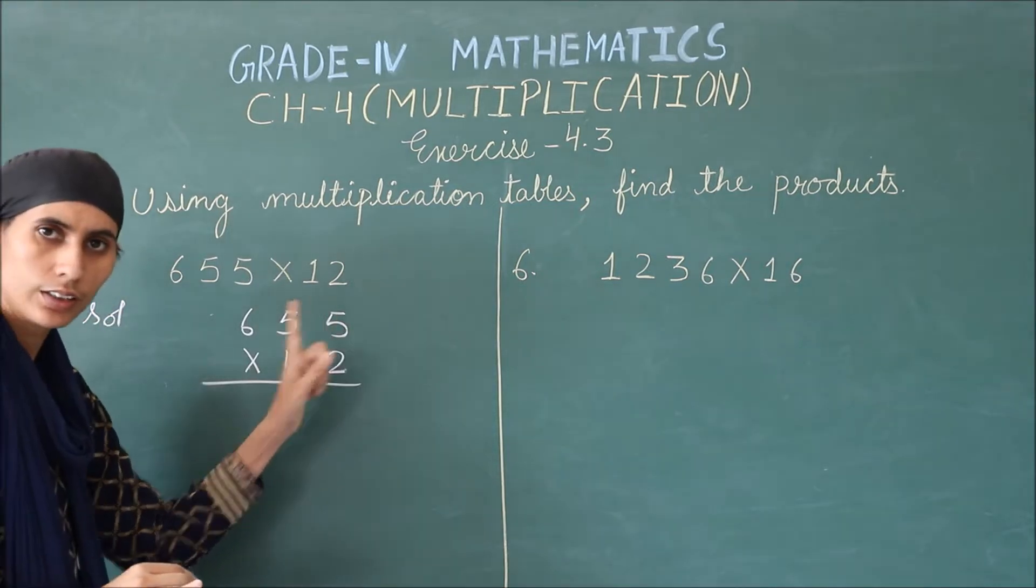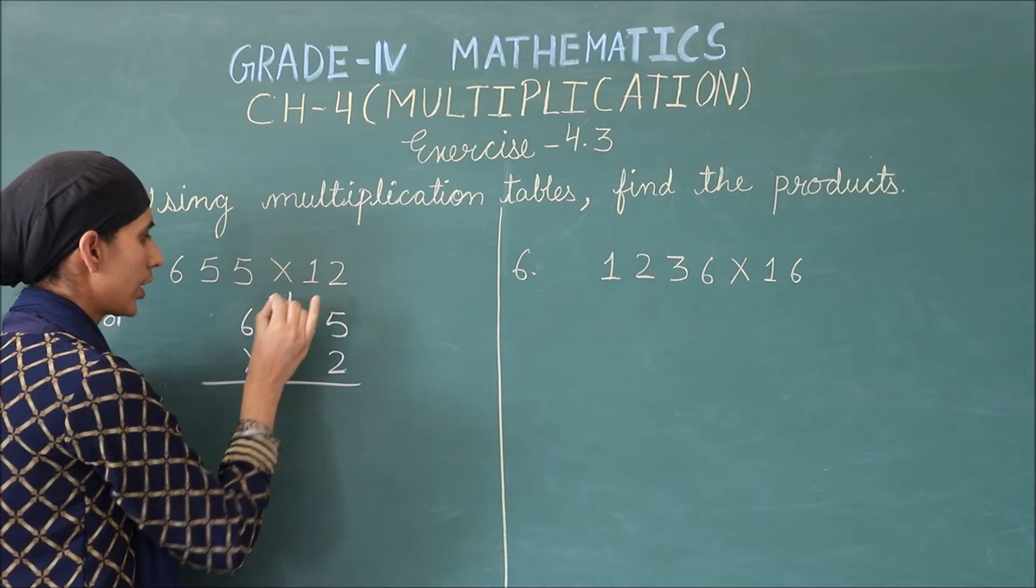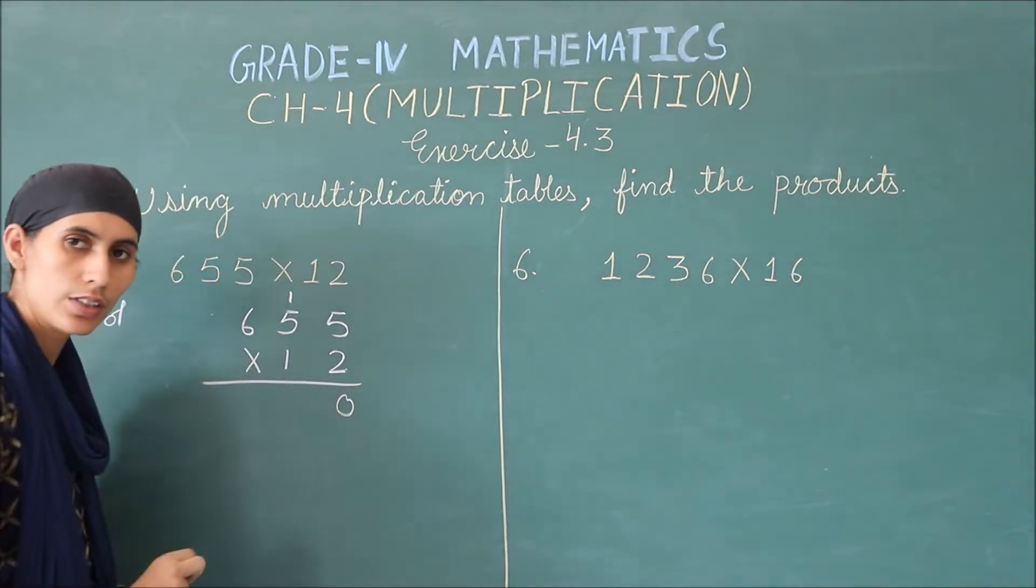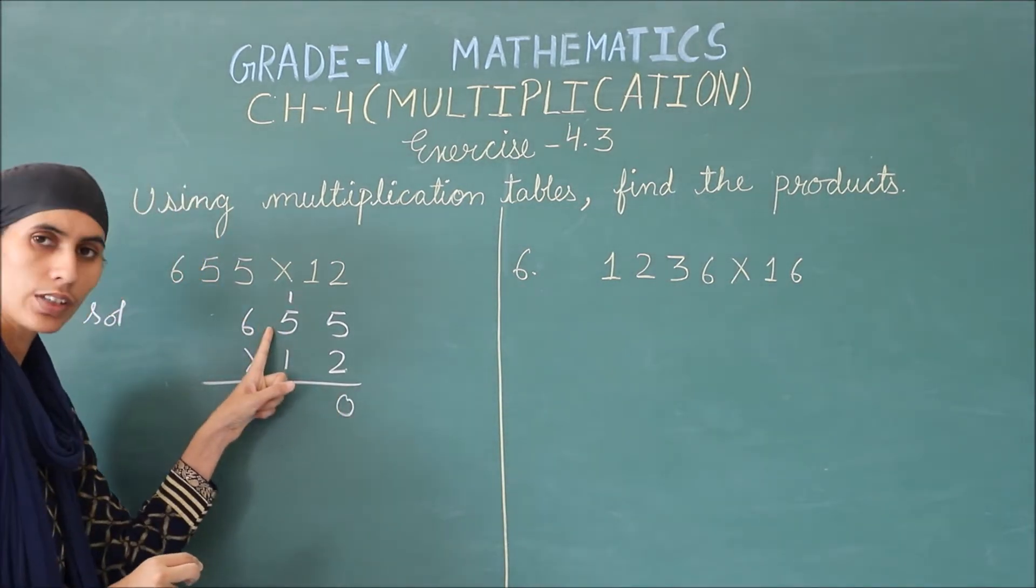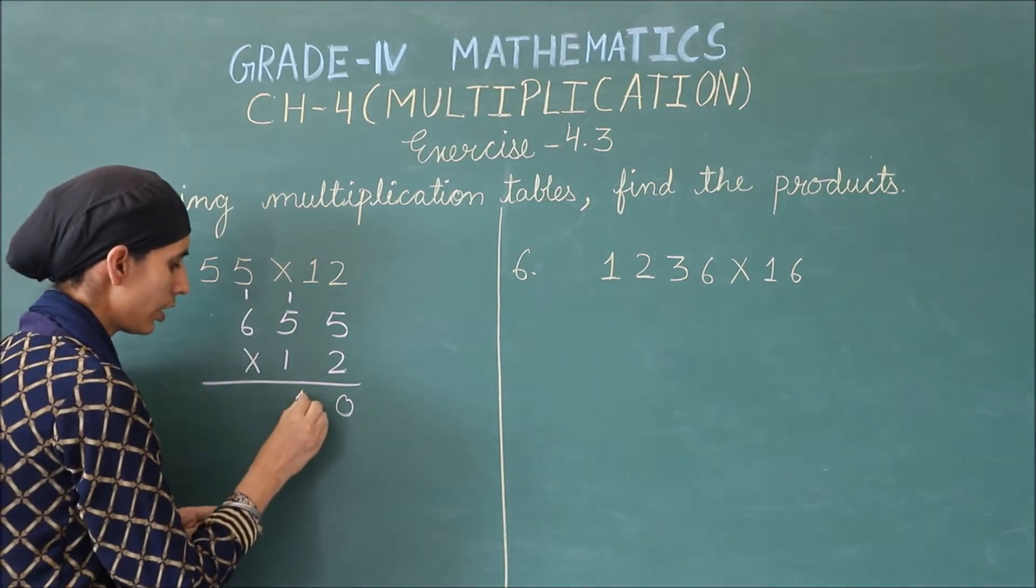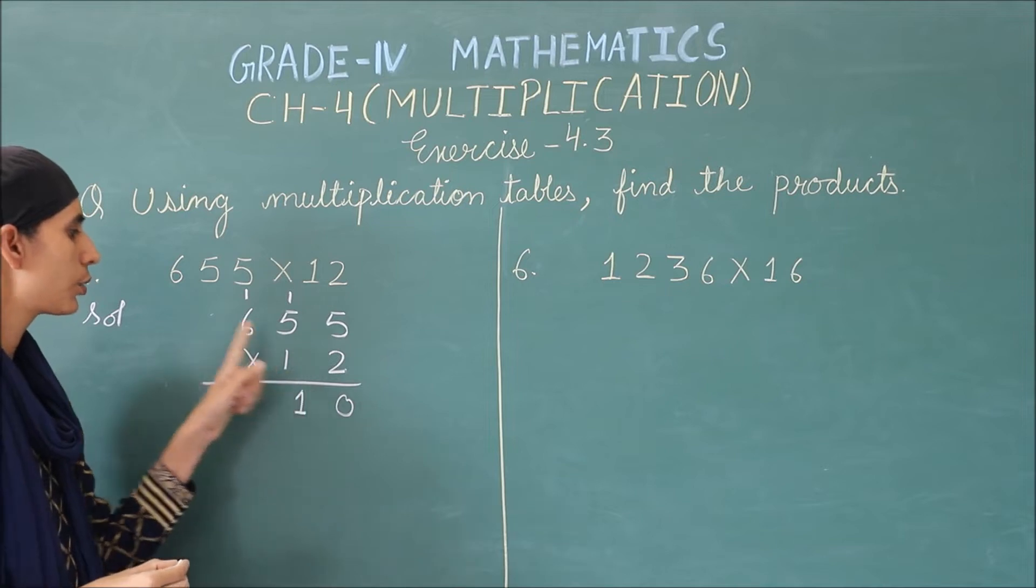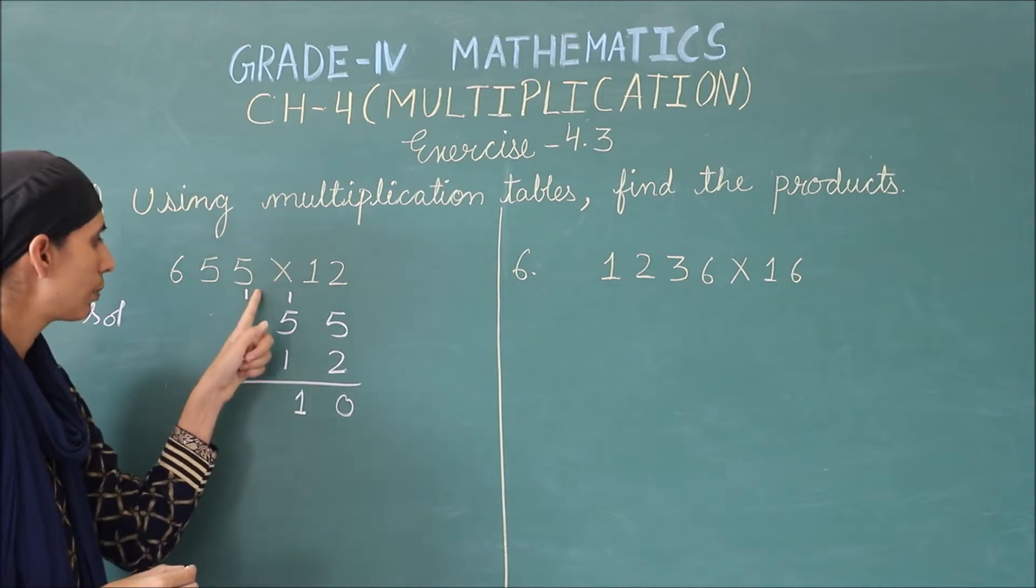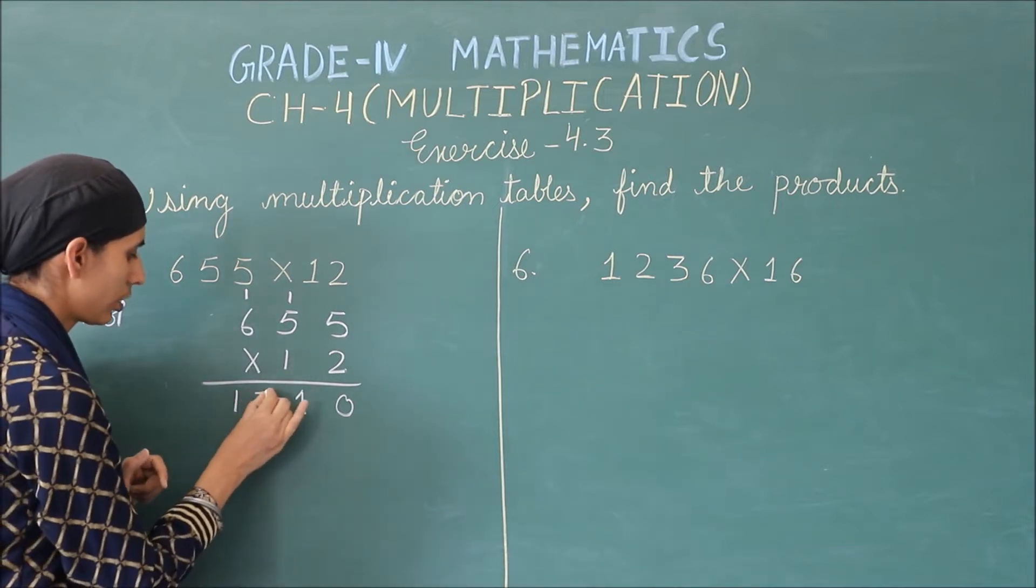2 times 5 is 10. 1 carry, 0. Again, 2 times 5 is 10. 10 plus 1 is 11. Again, 1 carry and 1 I am writing here. 2 times 6 is 12. 12 plus 1 is 13.